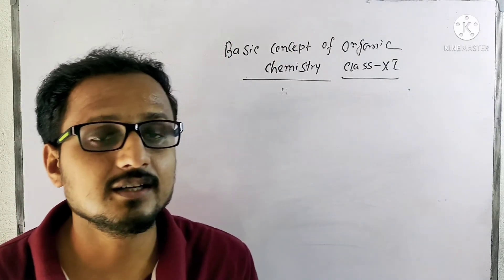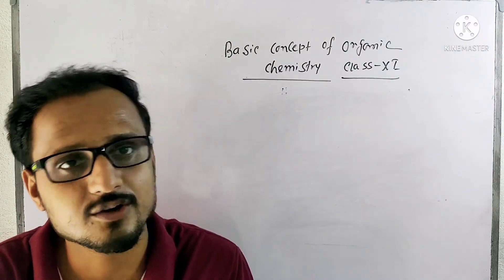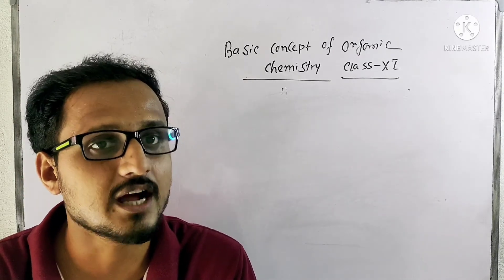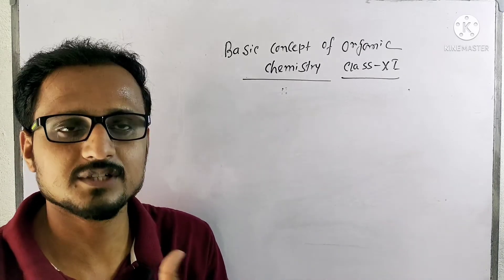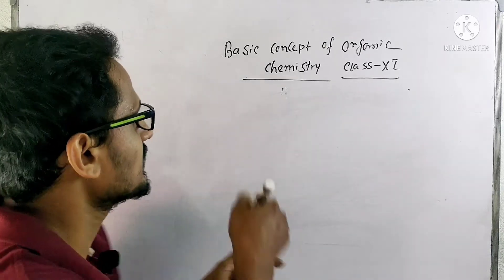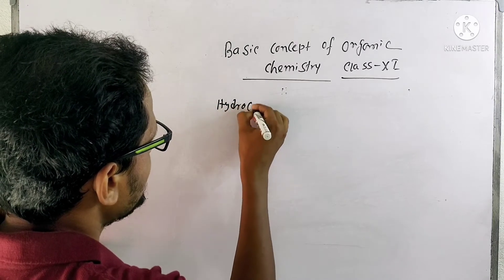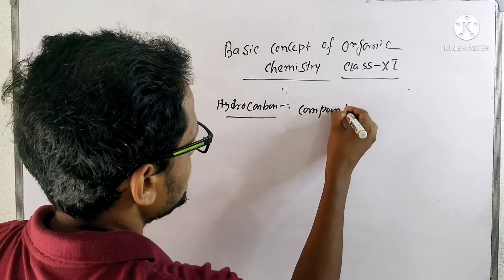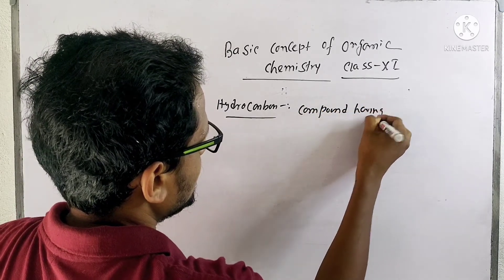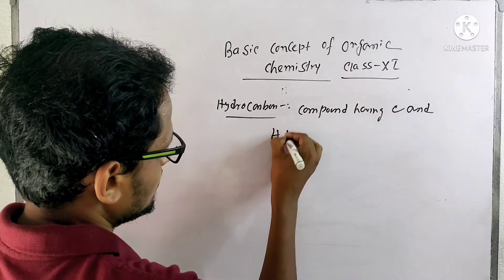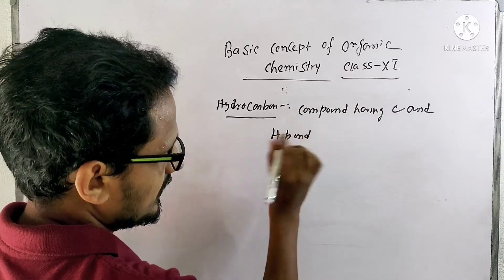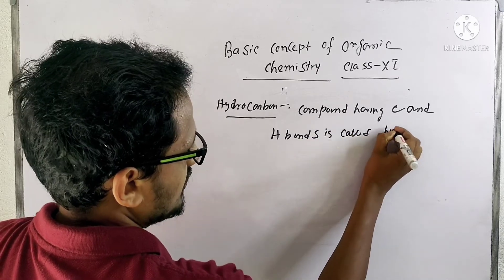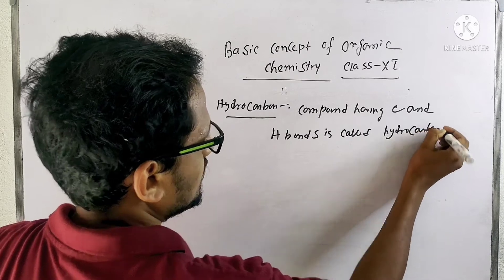Now we can divide organic compounds into aliphatic and aromatic. These all are hydrocarbons. So what is a hydrocarbon? Compounds having carbon and hydrogen are called hydrocarbons.